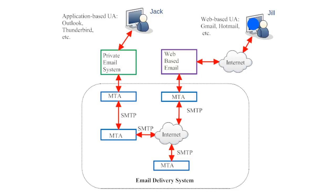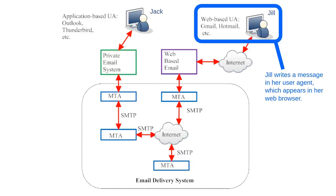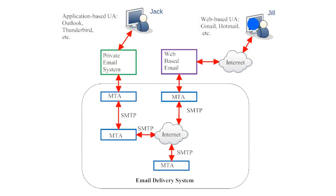If Jill wanted to send a message back to Jack, the whole process would be reversed. Jill would write a message in her user agent, which appears in her web browser. When she hits send, the email travels through the internet to her web-based email client. That email client forwards the email to a message transfer agent, and the message travels across the internet through various message transfer agents.